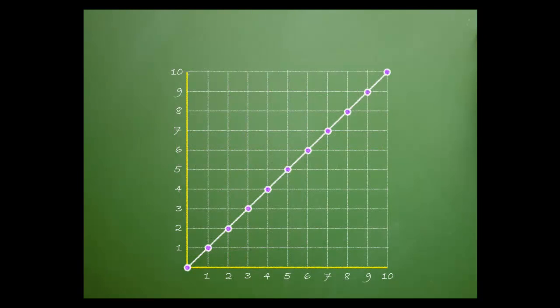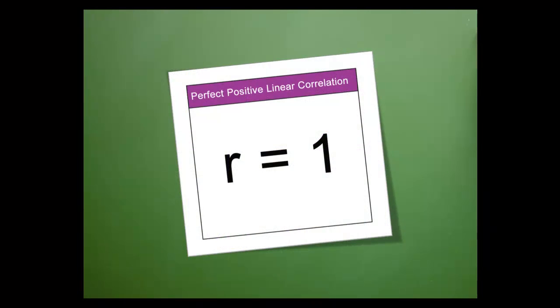Here's a different example. Notice that the line goes through every data point, also creating a perfect line. But here, the slope is positive. When both of these occur, we have a perfect positive linear correlation. Data that has a perfect positive linear correlation has an r value of 1.